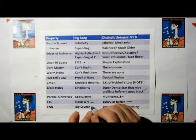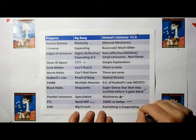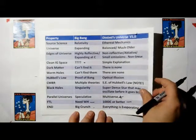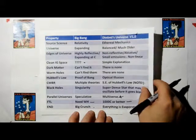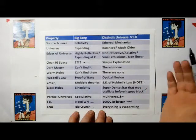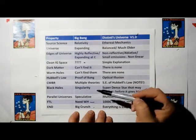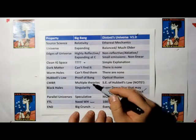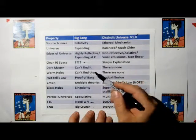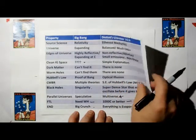In the Big Bang Theory, it's going to end in a big crunch. In Distinti's universe, everything is slowly evaporating. It's a much more salient, sane universe. But obviously, if you're going to have a discovery show, then people are going to want to talk about wormholes and paradoxes and alternate universes instead of a nice, plain, simple universe.